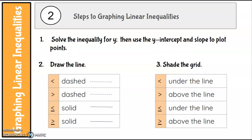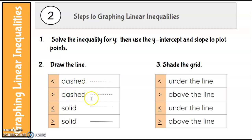Linear equations and inequalities are also similar processes but there are some key differences. Here are the steps for graphing linear inequalities: just like an equation, you're going to solve the inequality for y and use the y-intercept and slope to plot points. Here are some key differences: for the line, if it's less than or greater than, it's going to be a dashed line, because anything on the line will not actually be a solution.